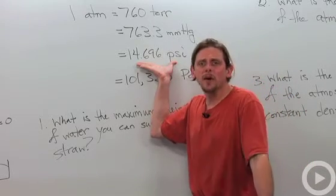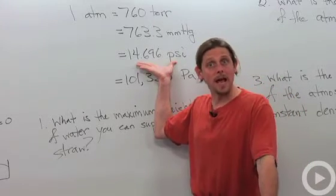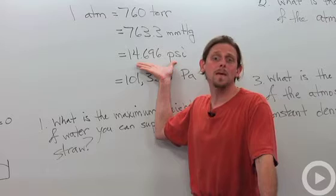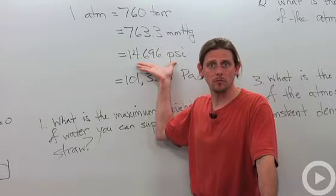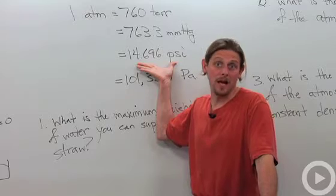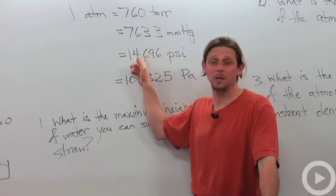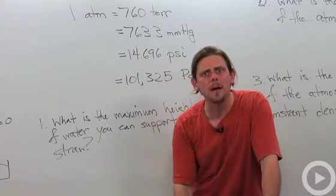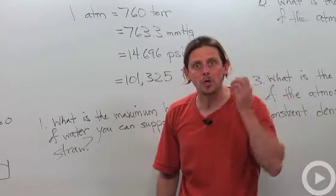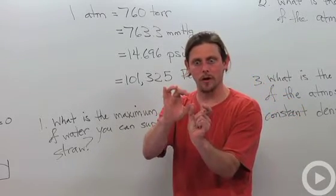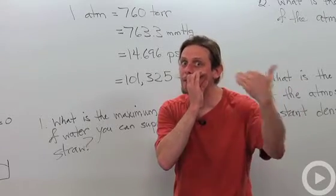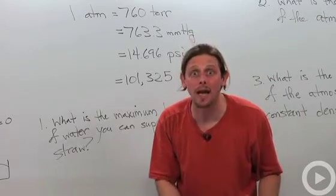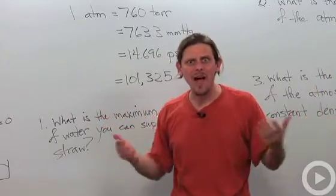Now for a standard unit in the United States, people often use psi, pounds per square inch. One atmosphere in psi is approximately 14.7 psi. So what does that mean? Well that means that for every square inch of your face, so inch inch, so something like that, I've got 14.7 pounds pushing in every single square inch. That's a lot. How come I don't just collapse?